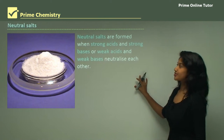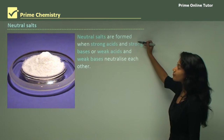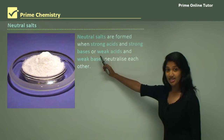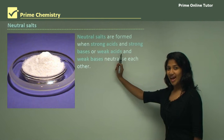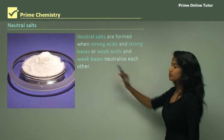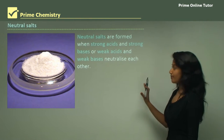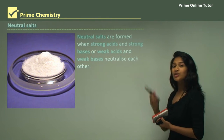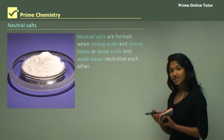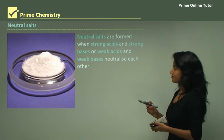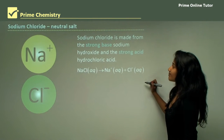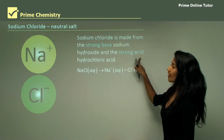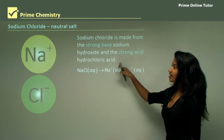Neutral salts are formed when strong acids and strong bases react, or when weak acids and weak bases react. For example, sodium chloride is made from the strong base sodium hydroxide and the strong acid hydrochloric acid.